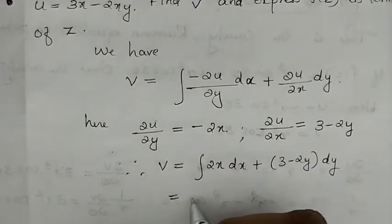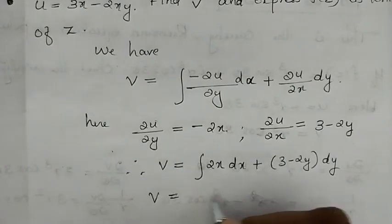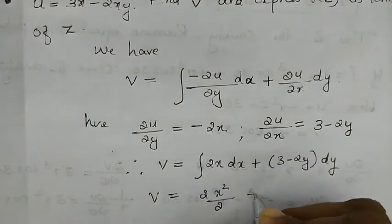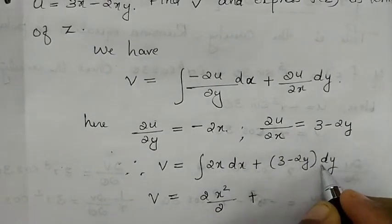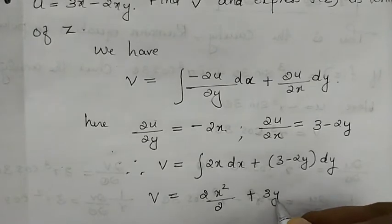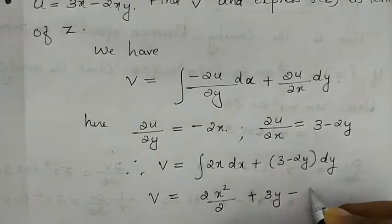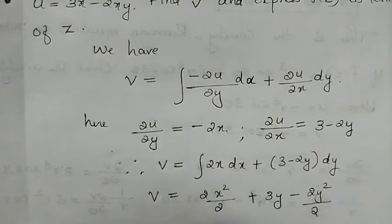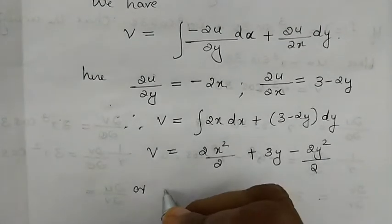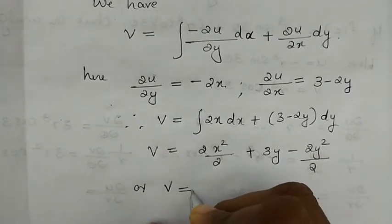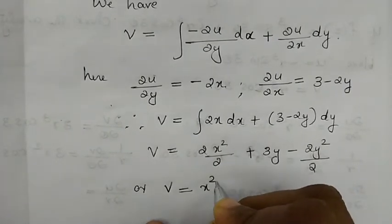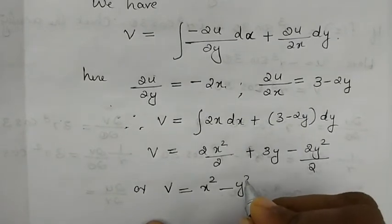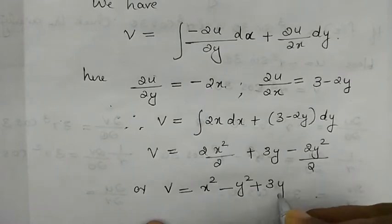Integrating: v = 2x²/2 + 3y − 2y²/2, which simplifies to v = x² + 3y − y².